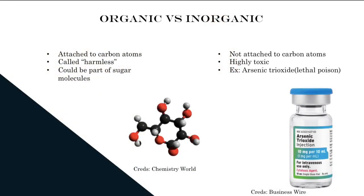Organic vs. Inorganic: organic arsenic is attached to carbon atoms and is described to be harmless. It is also said that they could be part of sugar molecules. Inorganic arsenic is not attached to carbon atoms and is highly toxic. An example of inorganic arsenic would be arsenic trioxide, which is a lethal poison. Arsenic trioxide is very strong and could be used in different ways — for example, the picture in the bottom right shows an arsenic trioxide injection, which is used to battle leukemia. This shows how dangerous this could potentially be.